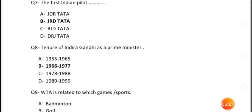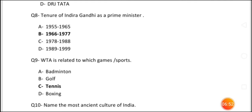Question number 8: Tenure of Indira Gandhi as Prime Minister — meaning from which year to which year was she Prime Minister? The answer is 1966 to 1977. She was Prime Minister of India from 1966 to 1977. Question number 9: WTA is related to which games and sports? The answer is tennis. WTA stands for Women's Tennis Association, which is related to Sania Mirza, who plays tennis.